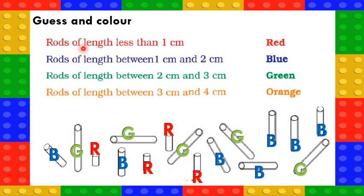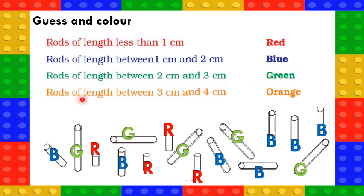Guess and color: here 16 rods are given. Color the rods of length less than 1 cm with red; rods of length between 1 cm and 2 cm with blue; rods of length between 2 cm and 3 cm with green; and rods of length between 3 cm and 4 cm with orange. Students are advised to measure the length of each rod themselves with a scale and color them accordingly. I have not colored but just given the color codes.